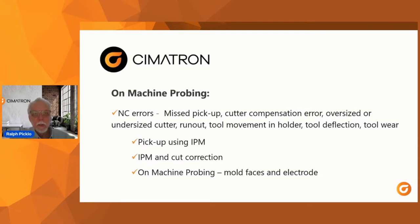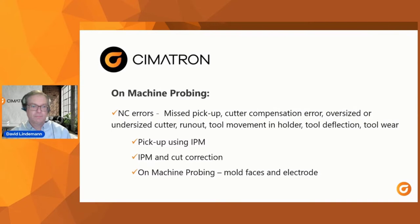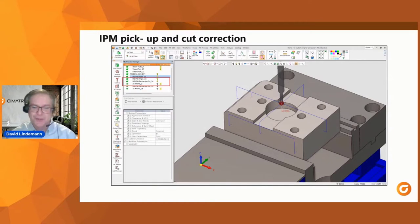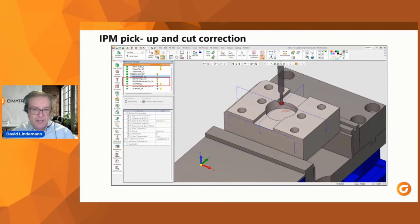Dave will show how we address these concerns and automate manufacturing without any human interaction. As we go through the example, pay attention to the blue lines — those are the motions of the probe. We'll go step by step, looking at each one so you understand how it was programmed, what it looks like, and what results we're hoping to achieve. We want to pick this part up, set it up to get our absolute work position, then cut it.